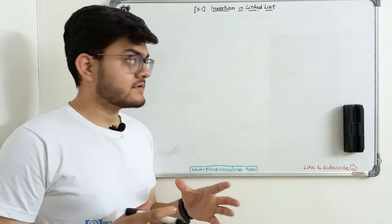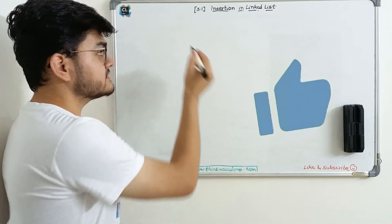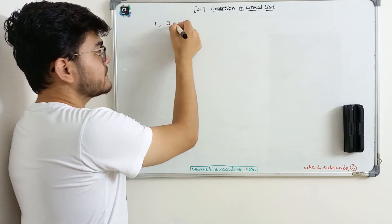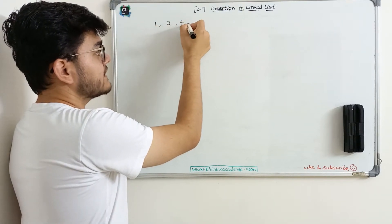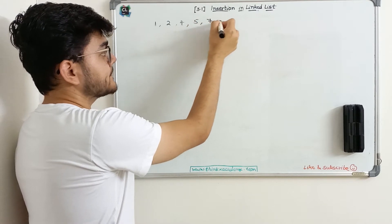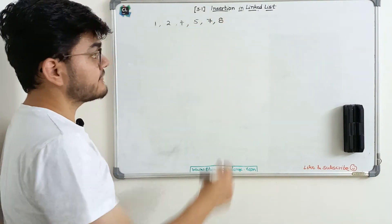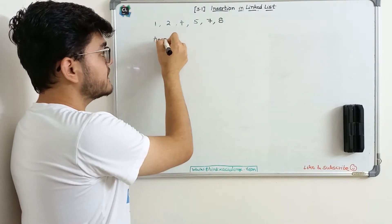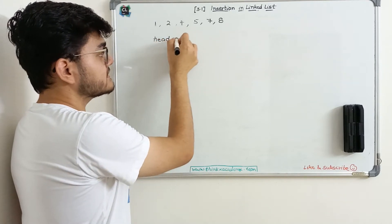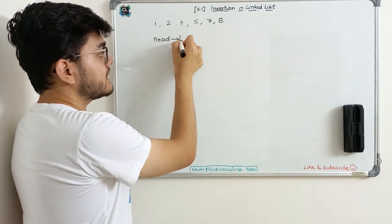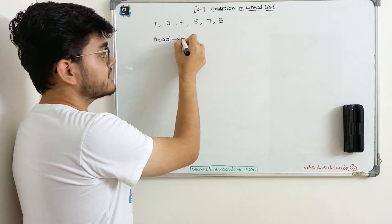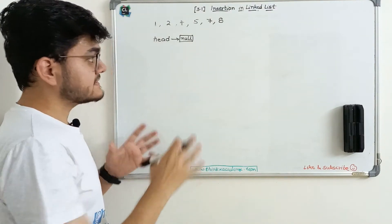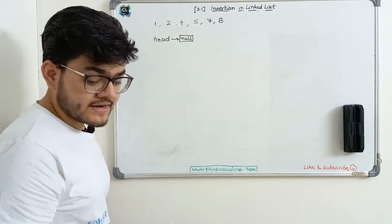Let's start with the very first steps and understand how we are going to perform insertion. Let's suppose we have some integer values like 1, 2, 4, 5, 7, and 8. We wish to insert these inside of a linked list. Initially, the linked list will have a head pointer, and the head pointer is pointing to a null value. This is the initial condition of the linked list that we need to write in the code.